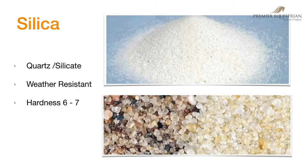Silica sand is composed of almost pure quartz grains. Quartz, or silicon dioxide, is one of the most common minerals found on the earth's surface. Almost all sand has a presence of silica. In pure silica, the grains are usually round to sub-angular because all of the other soft minerals have eroded off. Silica sand is extremely resistant to weathering and crushing, with a hardness of six to seven.